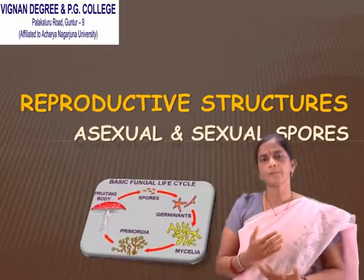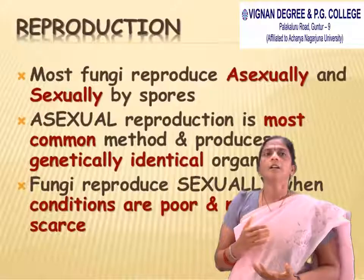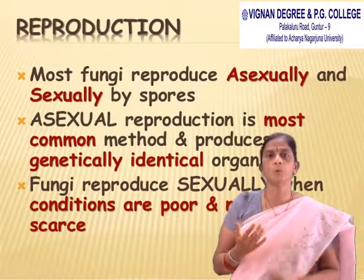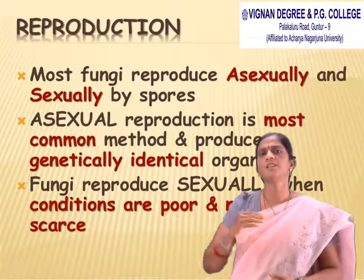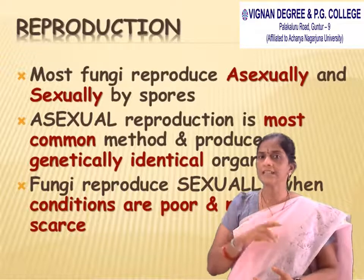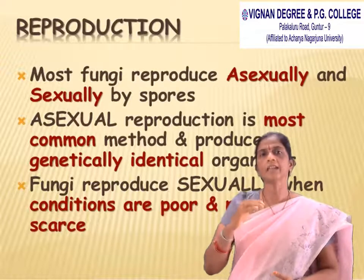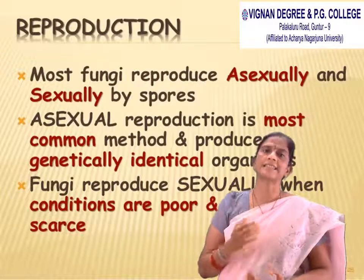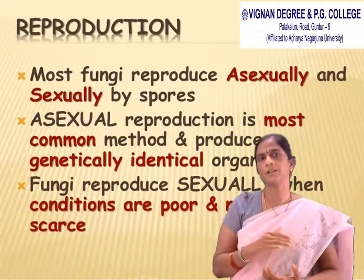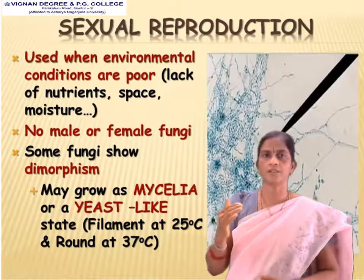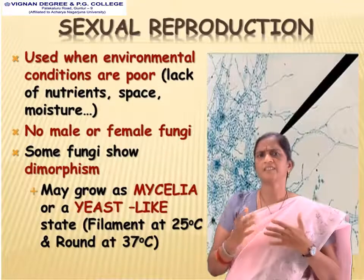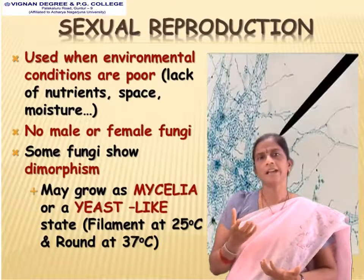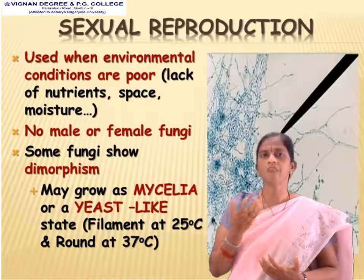Coming to reproduction — reproduction may be sexual and asexual. Most fungi reproduce asexually by spores; asexual reproduction is the most common method and produces genetically identical organisms. Fungi reproduce sexually when conditions are poor and nutritional scarcity occurs; only then do they undergo sexual reproduction.